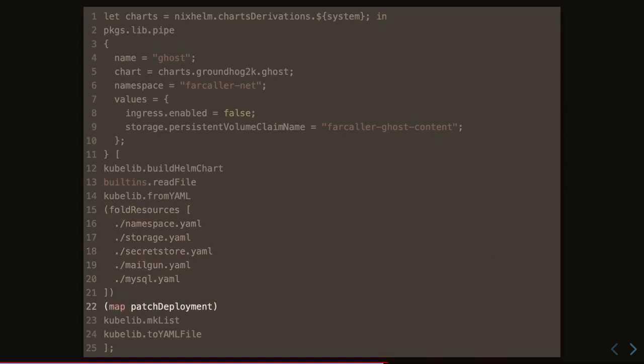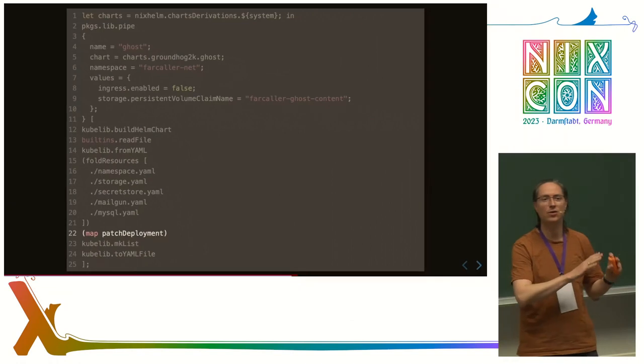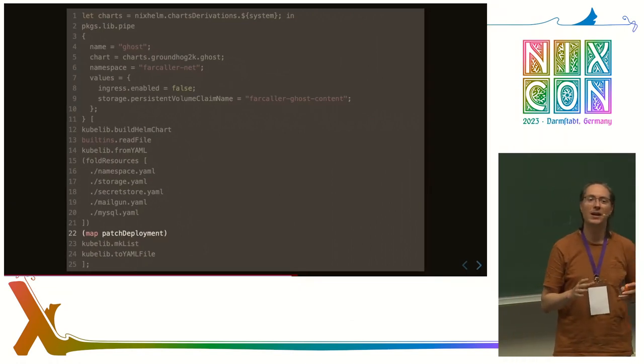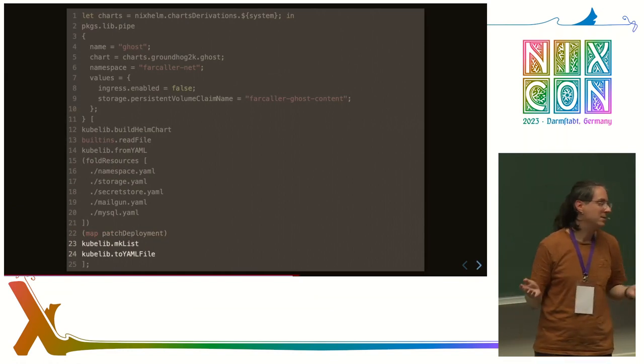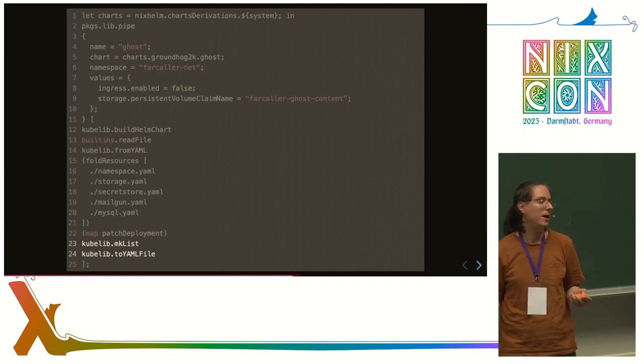In the Nix context, I pass some values to the Helm chart. I modify its behavior before it is compiled to the final YAML. I pass in the name, the namespace where this code is going to run. Then this information is passed down to the libPype function that runs it through all the rest of the pipeline.